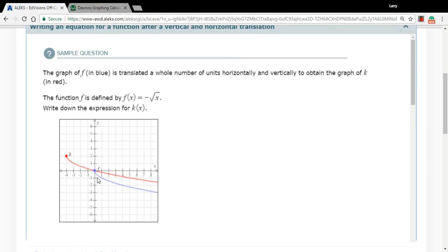Here we have a problem where we're being given an original function, this blue function here. They're telling us it's the negative square root of x, and then we have a function that's the same function that's gone through a transformation, a vertical and horizontal transformation. So it looks like it's been pushed up two spaces and moved to the left four spaces, and we're supposed to write the formula for this.